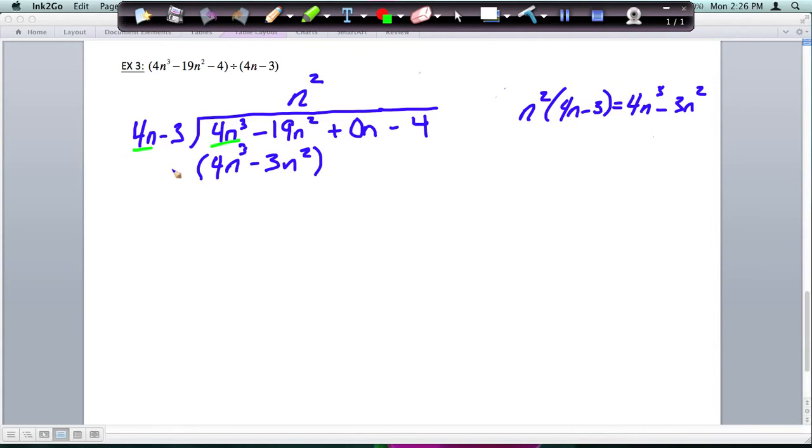So we're subtracting, which means I'm going to change my signs plus and negative, and then this negative becomes plus. The 4n cubes cancel, negative 19 plus 3 is negative 16n squared.